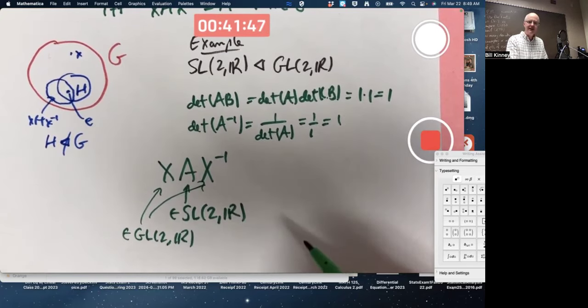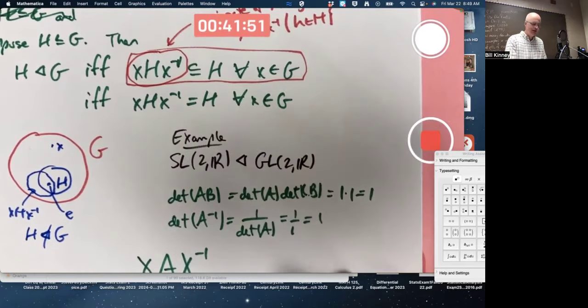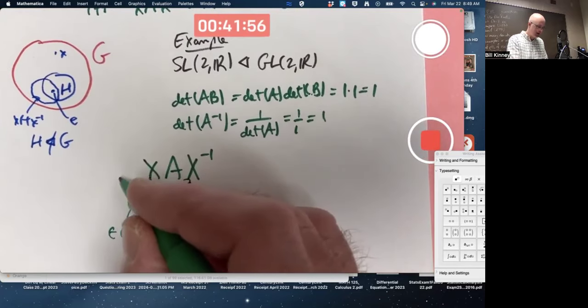I want to show this product is in SL(2,R). I want to show this thing is in H still. How do you do that? I got to show its determinant is one. So take its determinant.